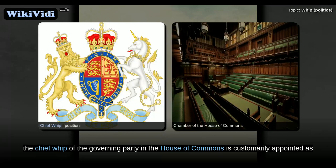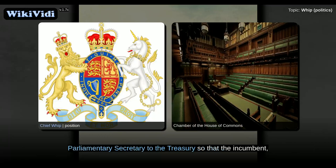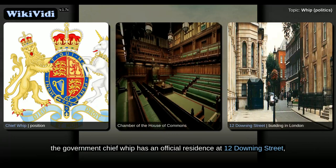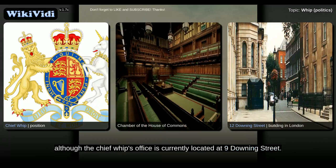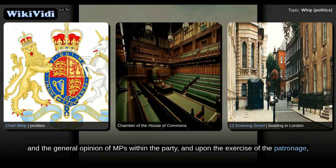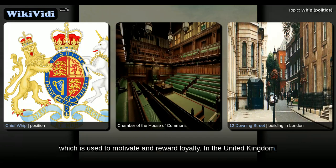United Kingdom. In British politics, the chief whip of the governing party in the House of Commons is customarily appointed as Parliamentary Secretary to the Treasury so that the incumbent, who represents the whips in general, has a seat and a voice in the cabinet. By virtue of holding the office of Parliamentary Secretary to the Treasury, the government chief whip has an official residence at 12 Downing Street, although the chief whip's office is currently located at 9 Downing Street. Whips report to the prime minister on any possible backbench revolts, the general opinion of MPs within the party, and upon the exercise of patronage, which is used to motivate and reward loyalty.